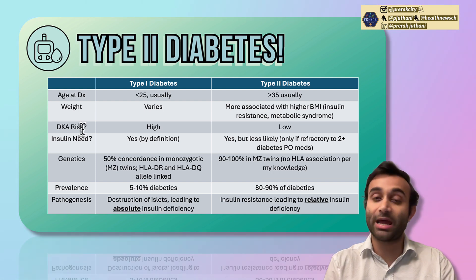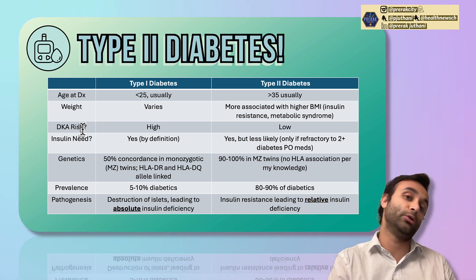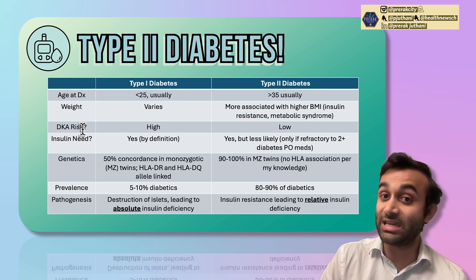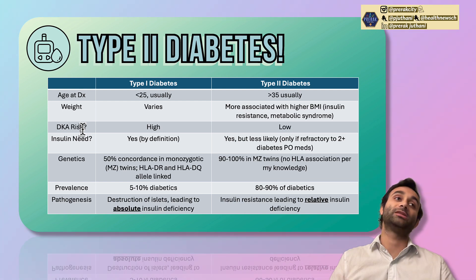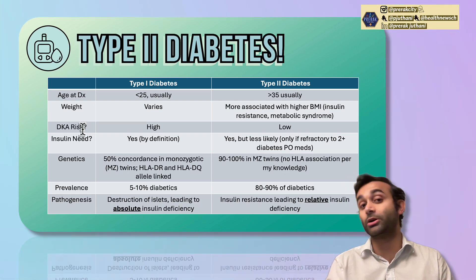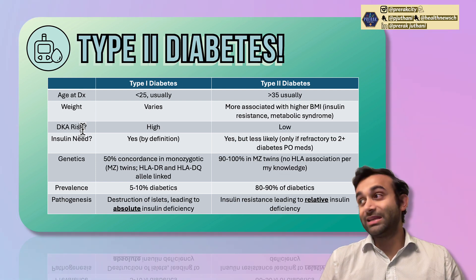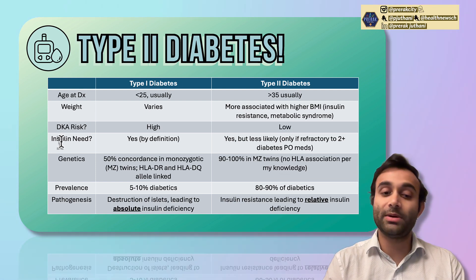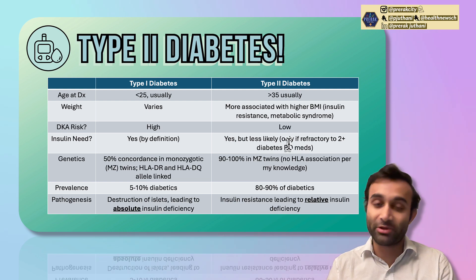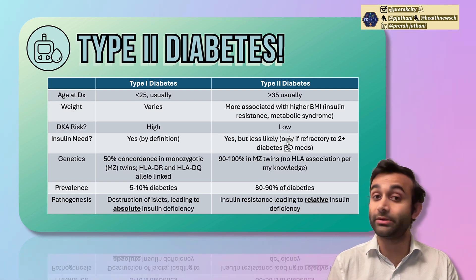Regarding DKA risk — diabetic ketoacidosis — when you don't have insulin, your body goes into a starvation-like state because it can't take glucose from the bloodstream into your cells. That leads to a ketotic state, and we also get acidotic because cells cannot undergo aerobic respiration and have to undergo anaerobic respiration, leading to some form of acidosis. Type 1 diabetics usually need insulin by definition, but type 2 diabetics don't usually need it. They can often get away with other medications such as metformin, which help manage the insulin-resistant state.